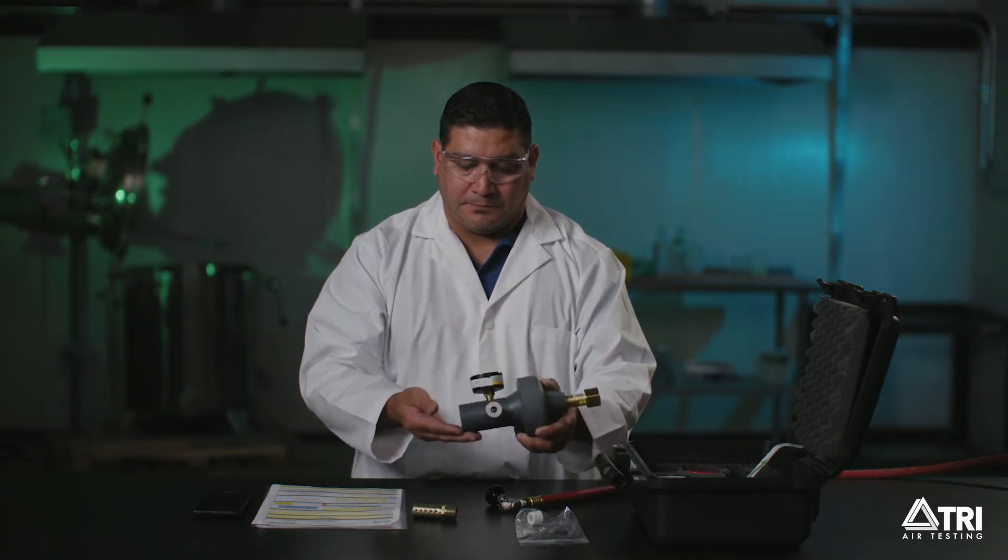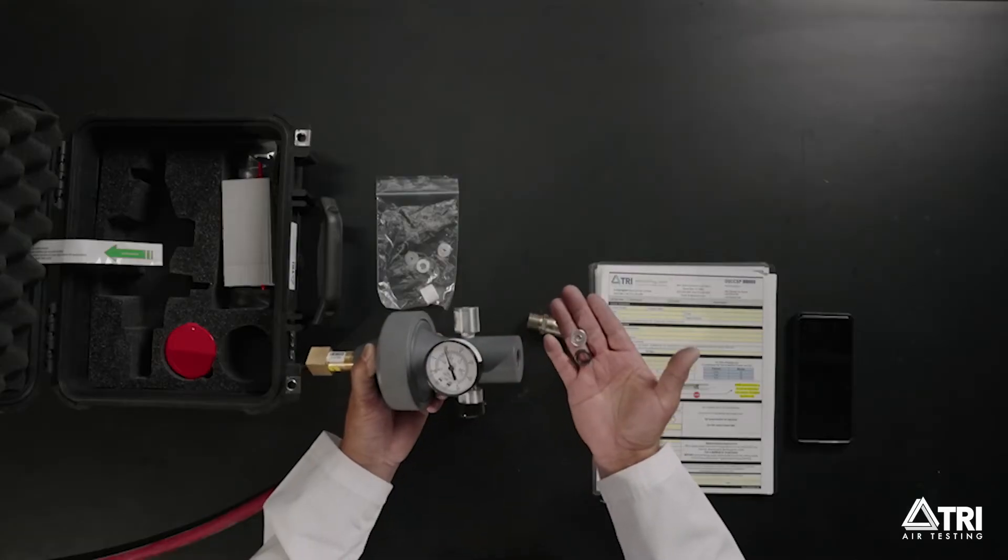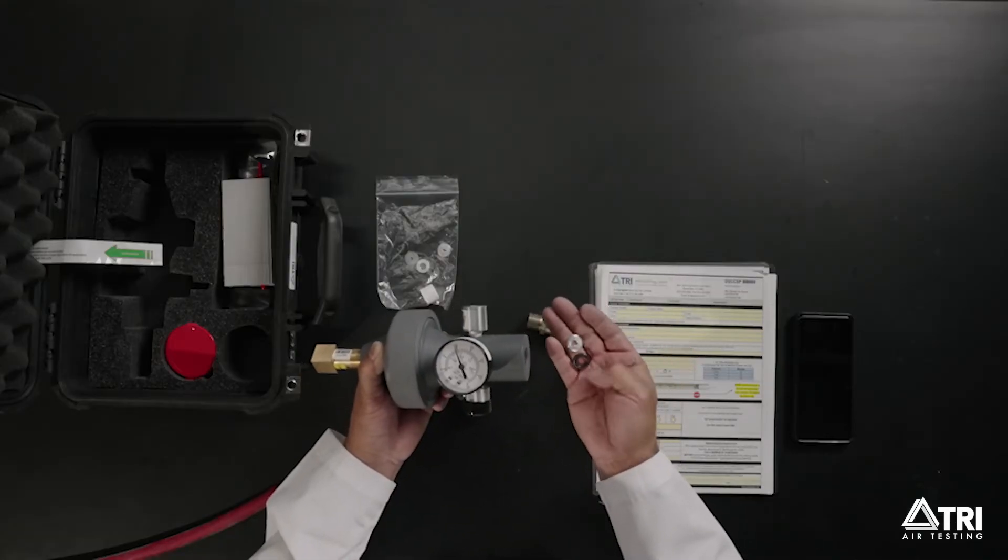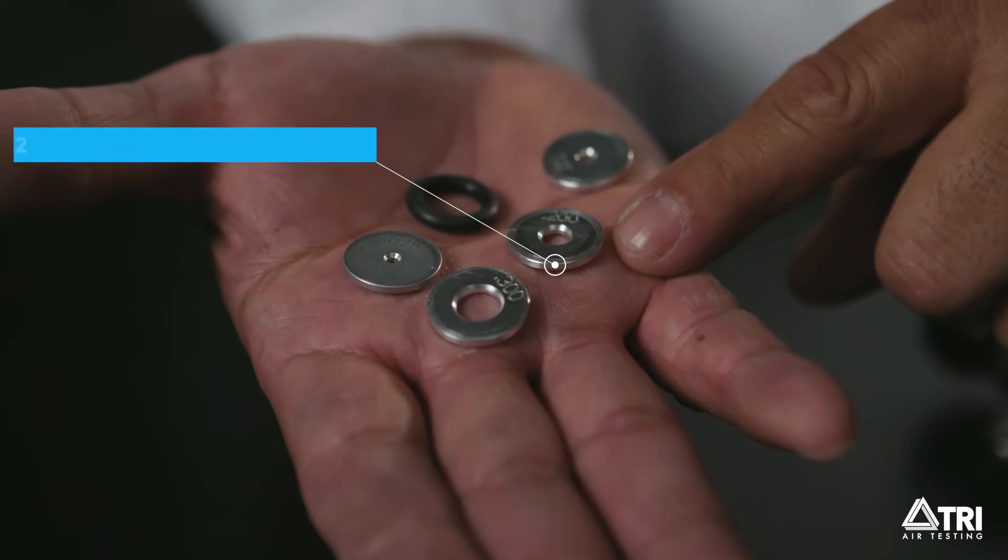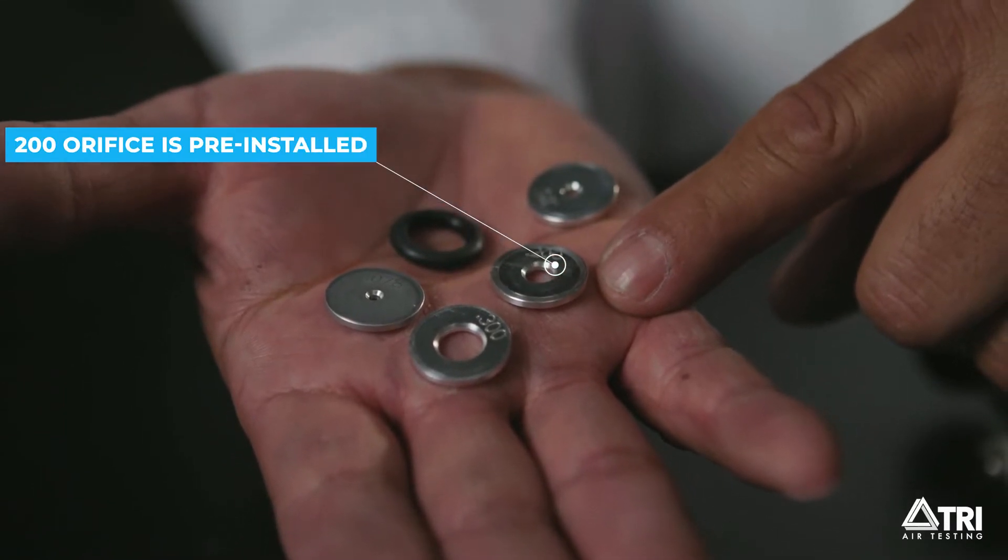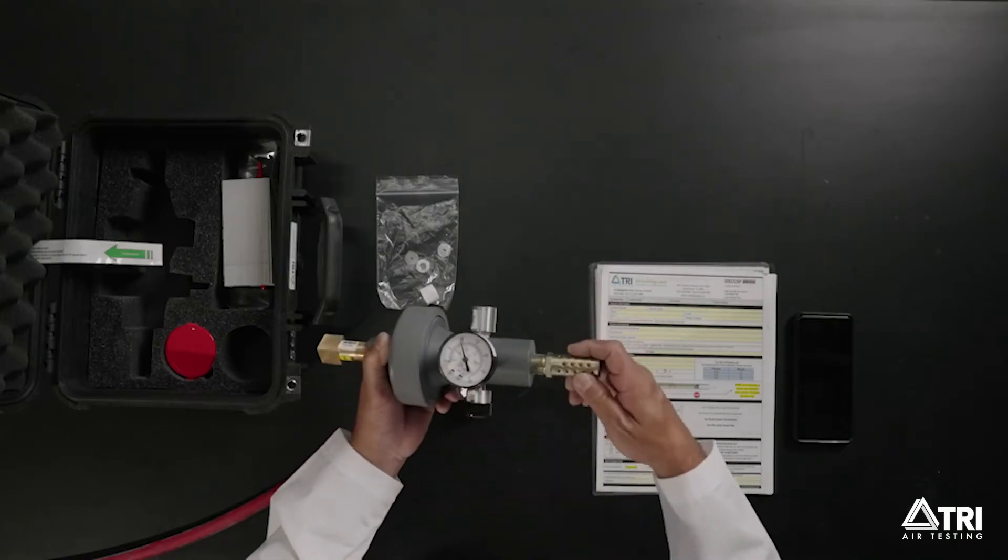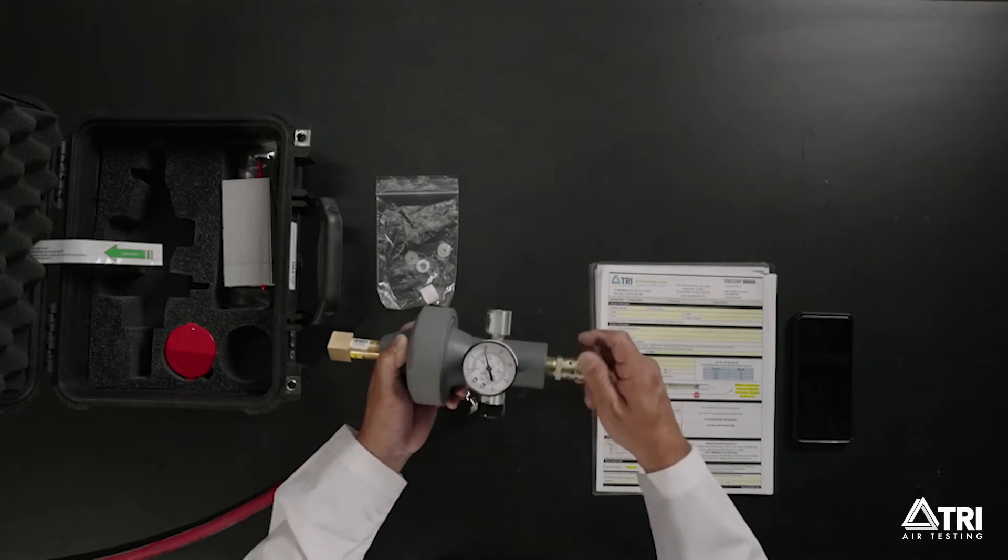To install or check the size of the installed orifice plate, unscrew the multi-hole noise muffler. The orifice plate is the aluminum disc with a hole in it. Record the orifice plate size on the data sheet under oil mist particulate sample data.